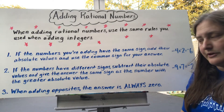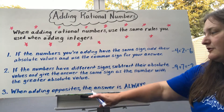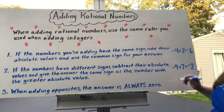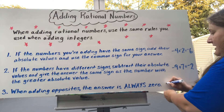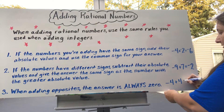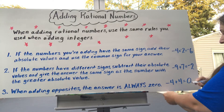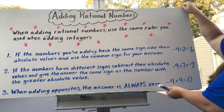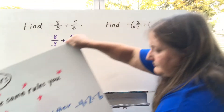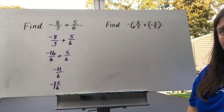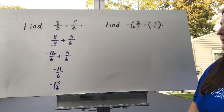The last addition rule we learned was that if you're adding opposites, the answer is always 0. An example of that would be if I was adding negative 4 and positive 4 — it's going to give me an answer of 0. Now we're just going to apply these same rules to adding rational numbers.